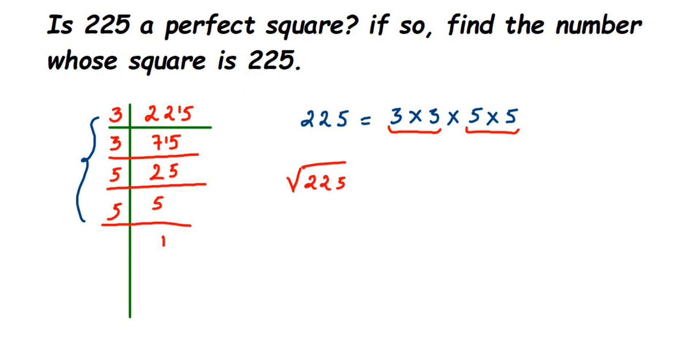From each pair, we take one factor. From here I will take one 3, and from here I'm going to take 5. It's 3×5 which is 15. So 15 is the answer. Square root of 225 is 15. So if you multiply 15 twice, if you multiply 15 and 15, you will get 225.